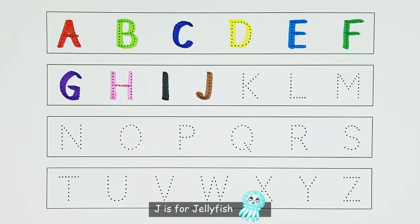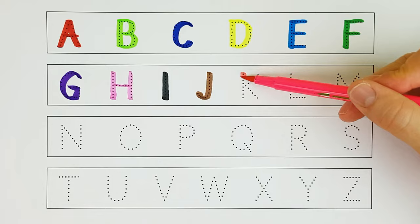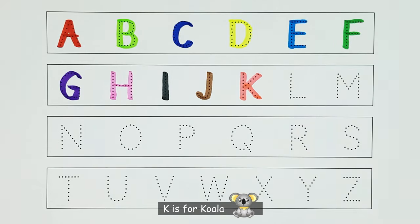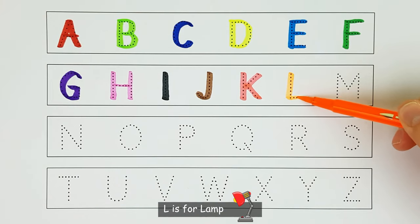J. J is for jellyfish. J. K. K is for koala. K. L. L is for lamp. L.